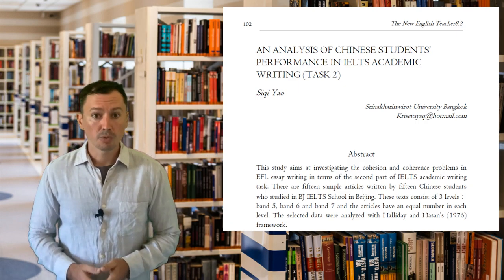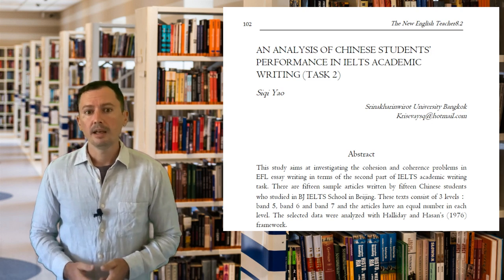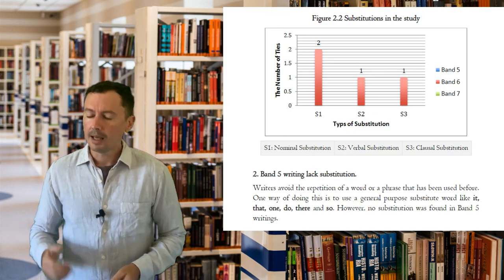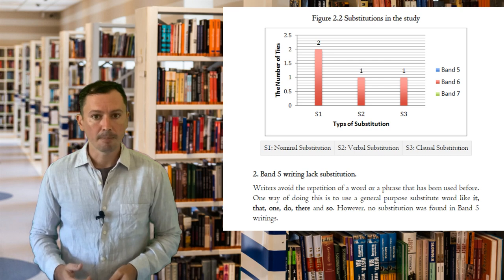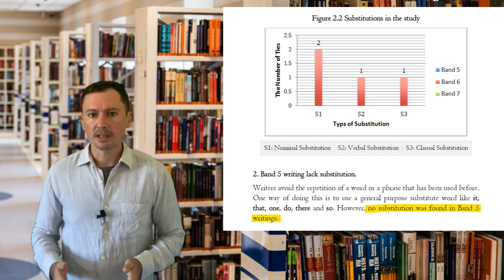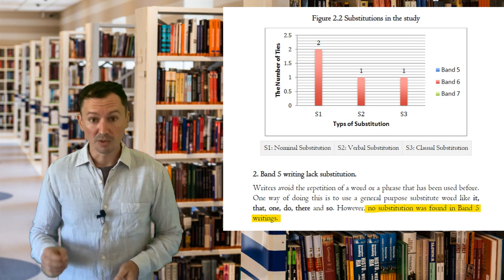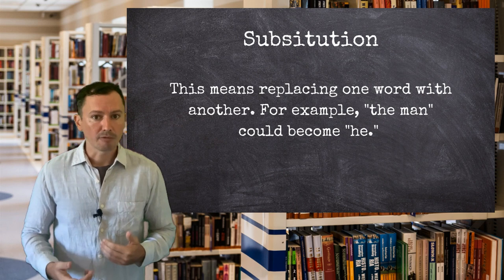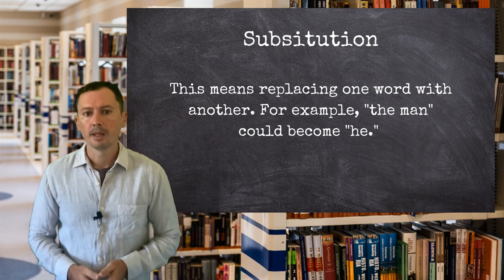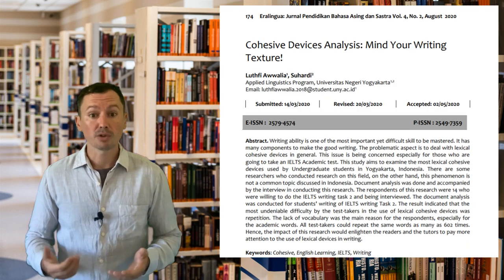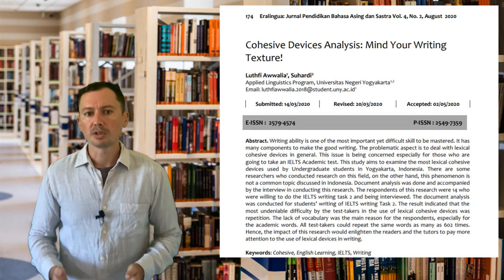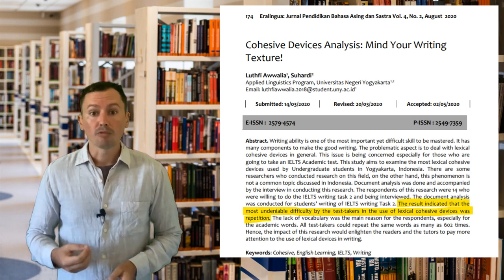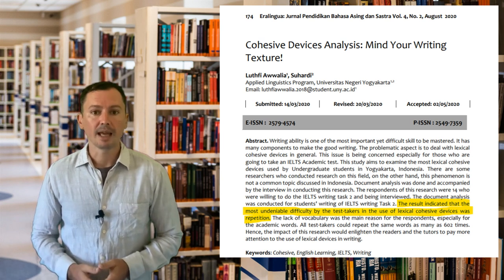This was confirmed by a 2014 study of Chinese IELTS candidates. It found that whilst repetition occurred in essays at band five, six and seven, it was much more common in the band five essays. The author of the study noted that no substitution was found in band five writings. The word substitution here means an effort at replacing a repeated word with another one. A 2020 study from Indonesia also found that in terms of coherence and cohesion, repetition was the biggest problem facing IELTS candidates.